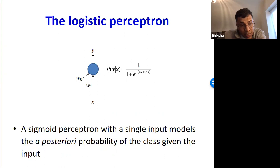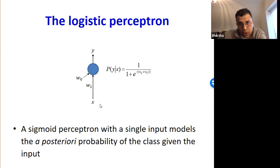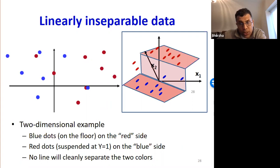The sigmoid captures the kind of behavior we wanted — it actually captures the posterior probability of class 1 given the input. A 1-input sigmoid activation perceptron is basically just this logistic function. This perceptron captures the posterior probability of class 1 given the input. And that was for one-dimensional data, but it also holds for multidimensional data. If you have multidimensional data that are not linearly separable, a logistic function would be more appropriate because it models the a posteriori probability of the class given the input.